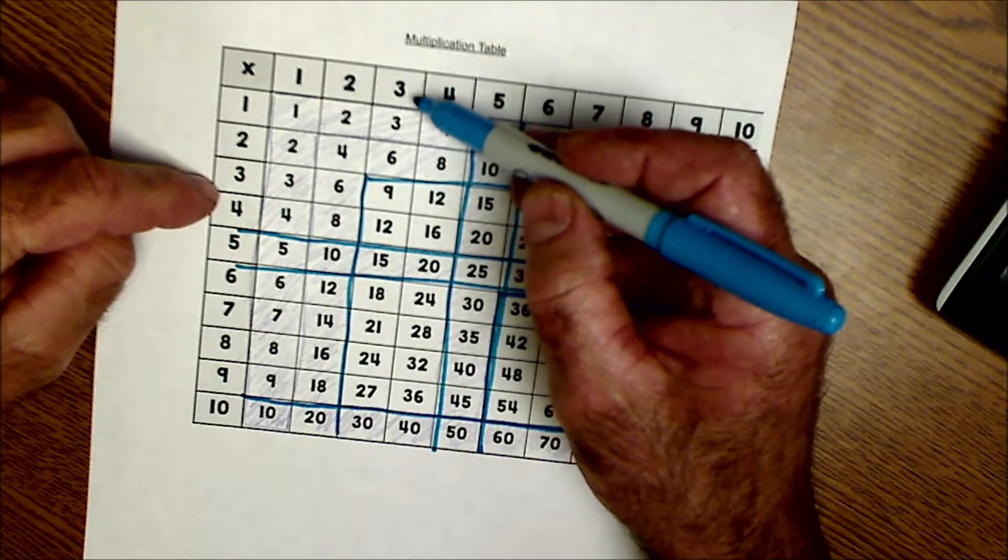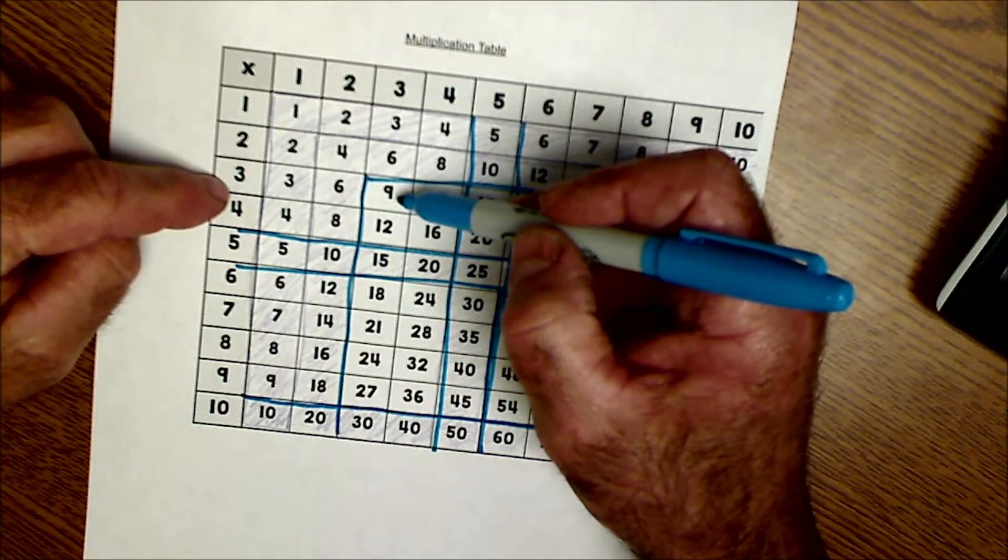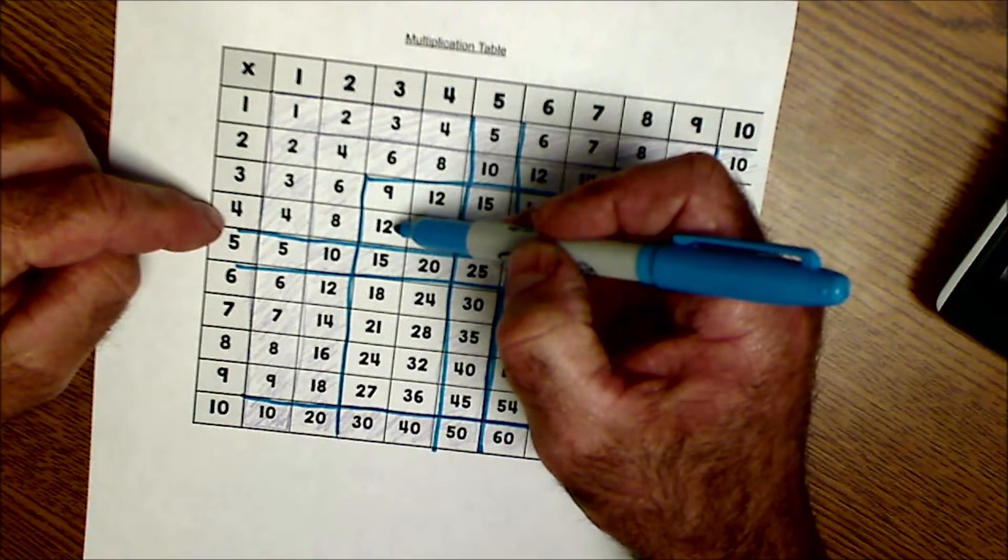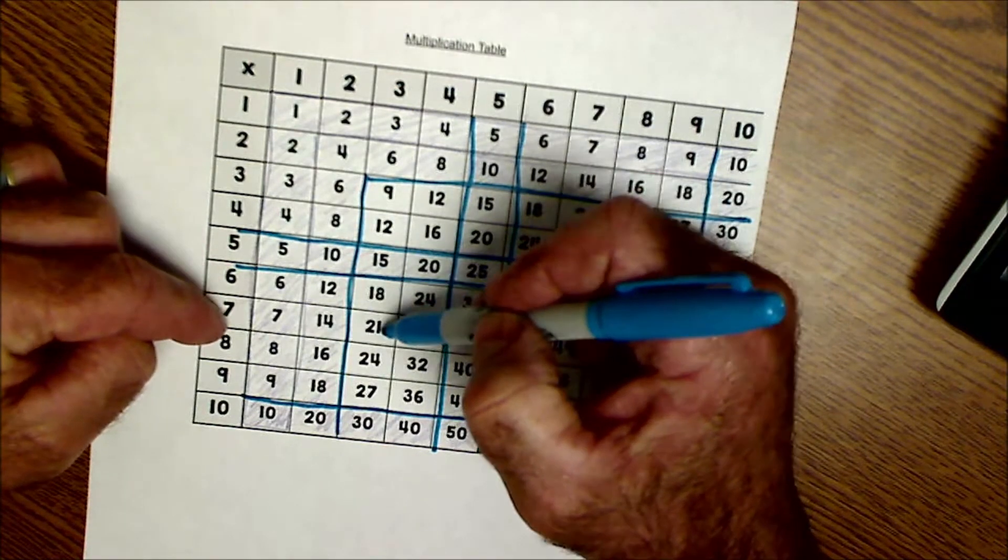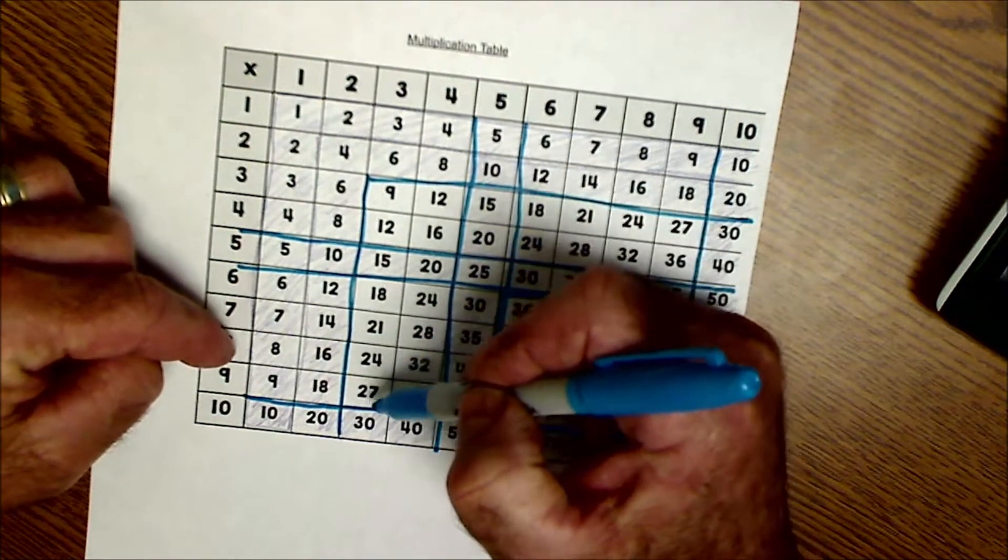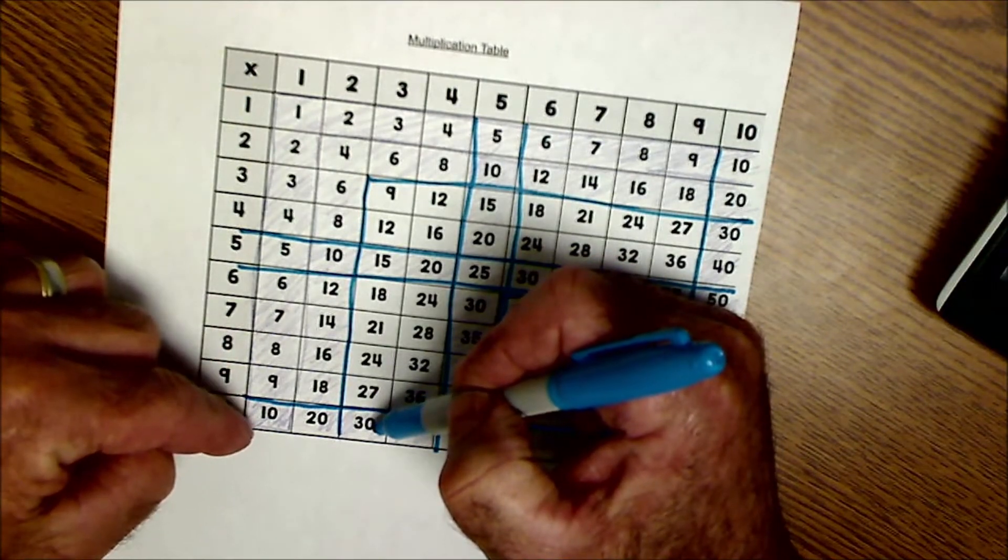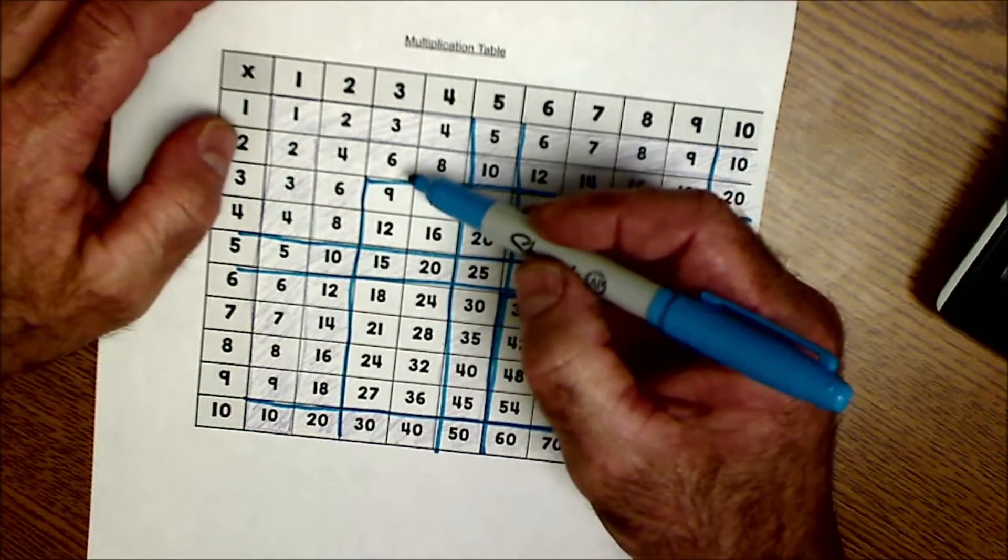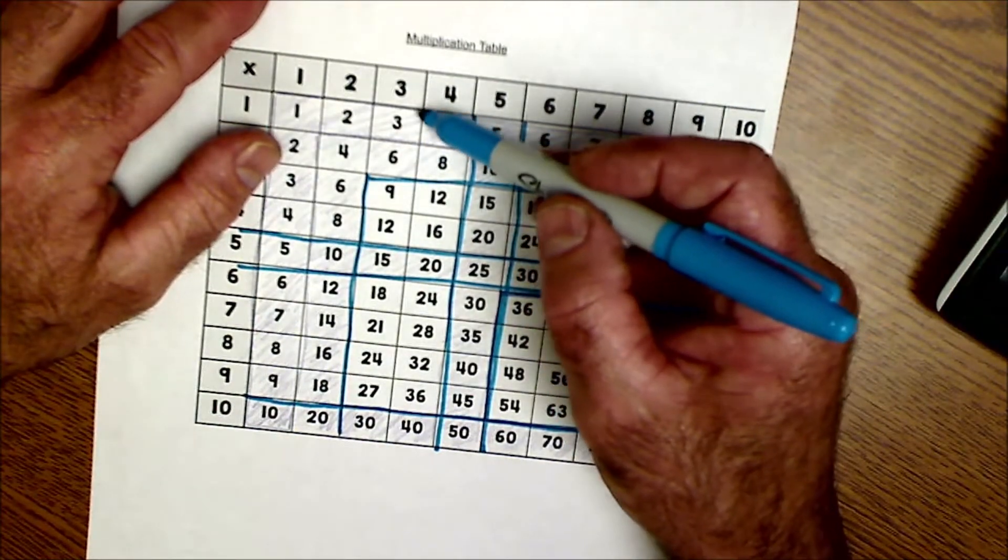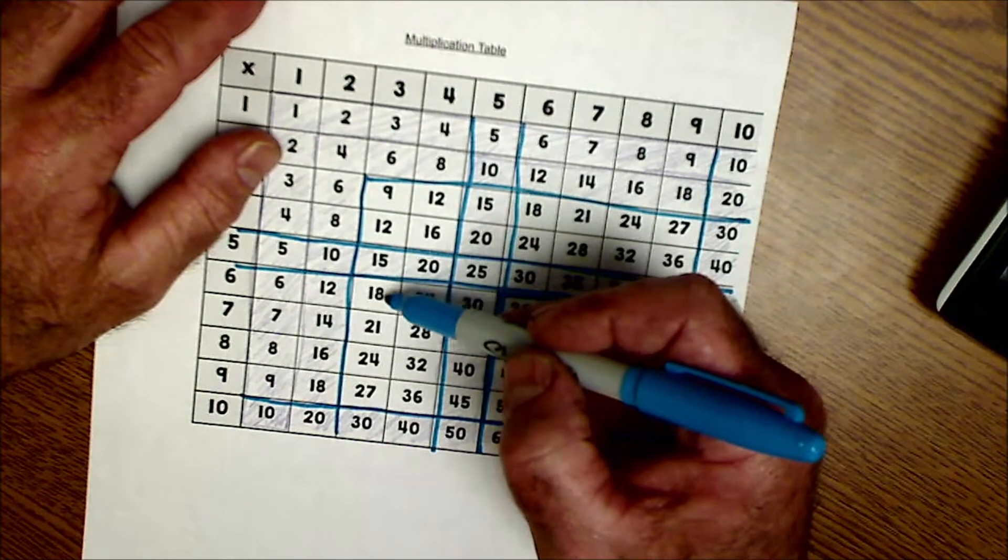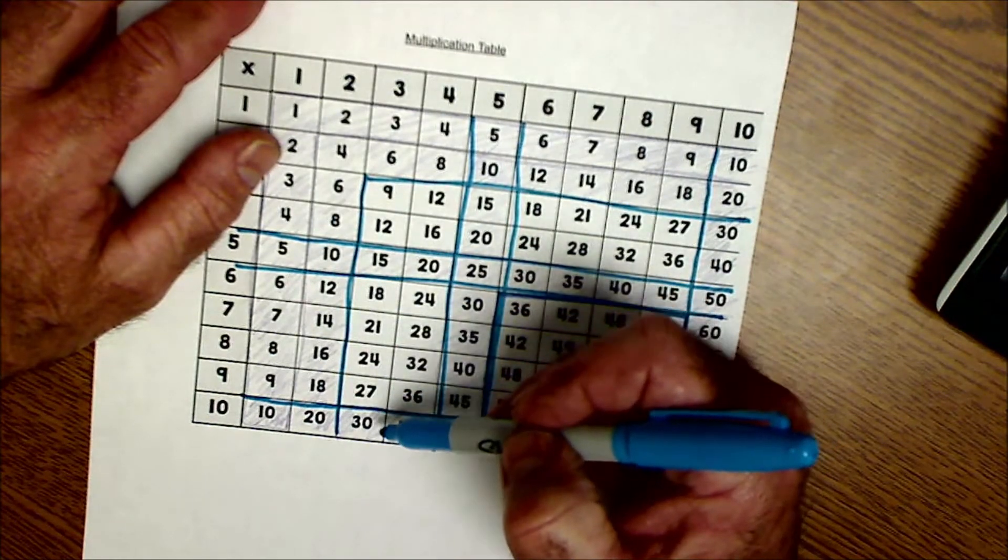Now we have our 3's. So 3 times 3 is 9, plus 3 is 12, plus 3 is 15, plus 3 is 18, plus 3 is 21, 24, 27, and then to 30. So I just work on adding 3's and make sure you could count by 3's and just do that every day. 3, 6, 9, 12, 15, 18, 21, 24, 27, 30.